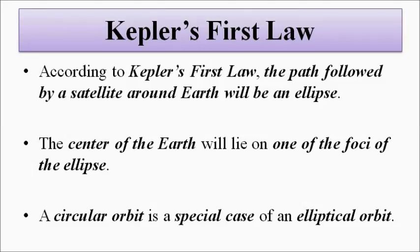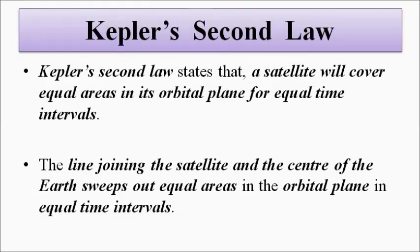Next is Kepler's second law. Kepler's second law says that in equal time intervals, a satellite will sweep out — will cover — equal areas in its orbital plane. We have already discussed orbital plane and basic concepts related to satellite orbit and satellite trajectory in previous videos, so please watch those first. What Kepler's second law is saying is that for equal time periods, a satellite will cover or sweep out equal areas in its orbital plane.